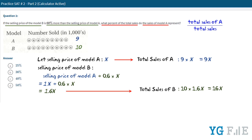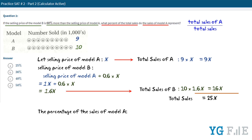Their sum will be the total sales, which is 9X plus 16X equals 25X. So now we have the total sales of model A and the overall total sales. The percentage of the sales of model A will be equal to the total sales of A divided by the total sales.